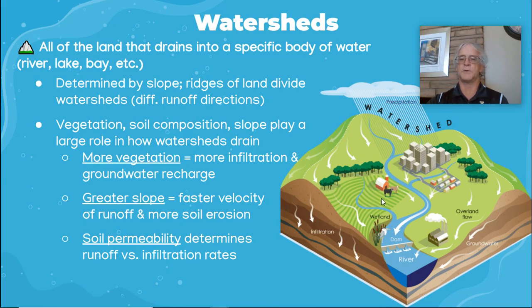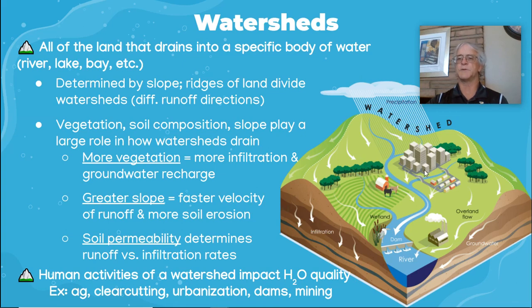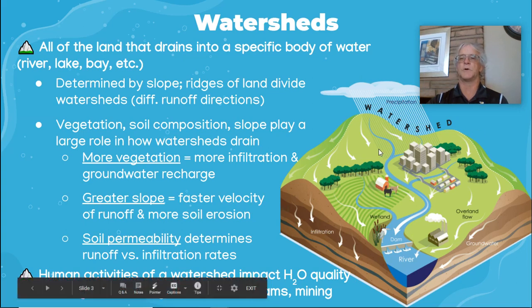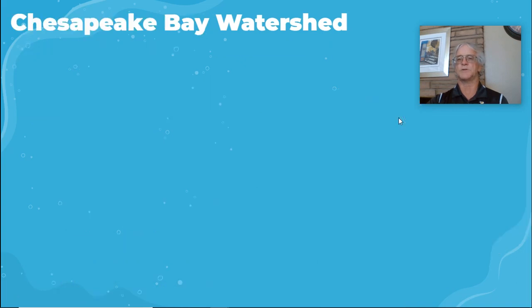Soil permeability — meaning what kind of soil it is — is going to determine the infiltration rates. In the city there's going to be less infiltration. Human activities impact watershed water quality: for example, clear cutting, if we remove the trees it's going to run off faster. If we have impermeable surfaces because of urbanization, or if we have dams or mining, it's going to cause differences in watershed behavior.